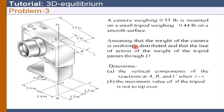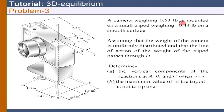The tripod has its own weight and the camera has its own weight. The weight of the camera is assumed to be uniformly distributed, so the camera will have its own mass center passing through the centroid of its rectangular shape. The tripod weighs 0.44 pound and its weight passes through point D.